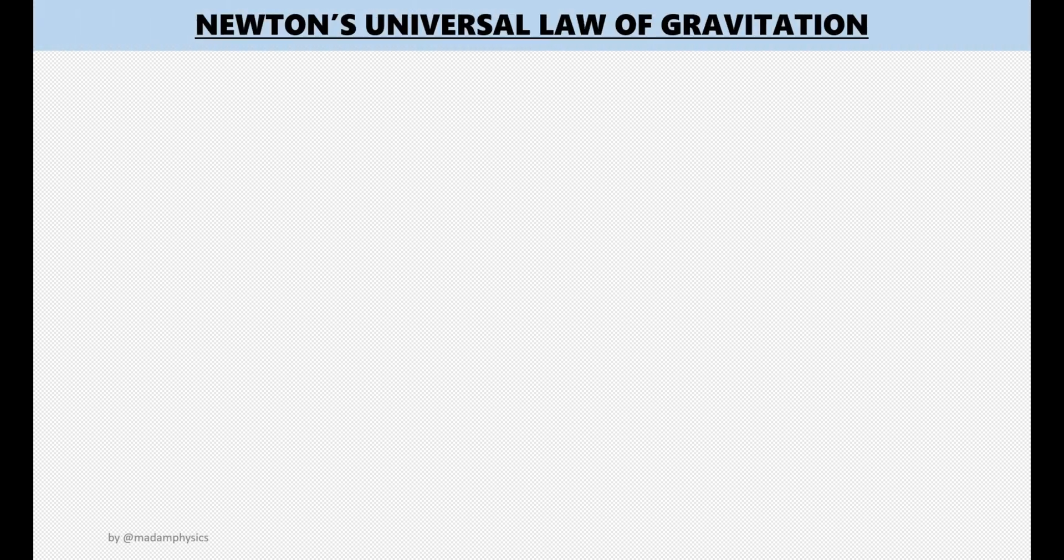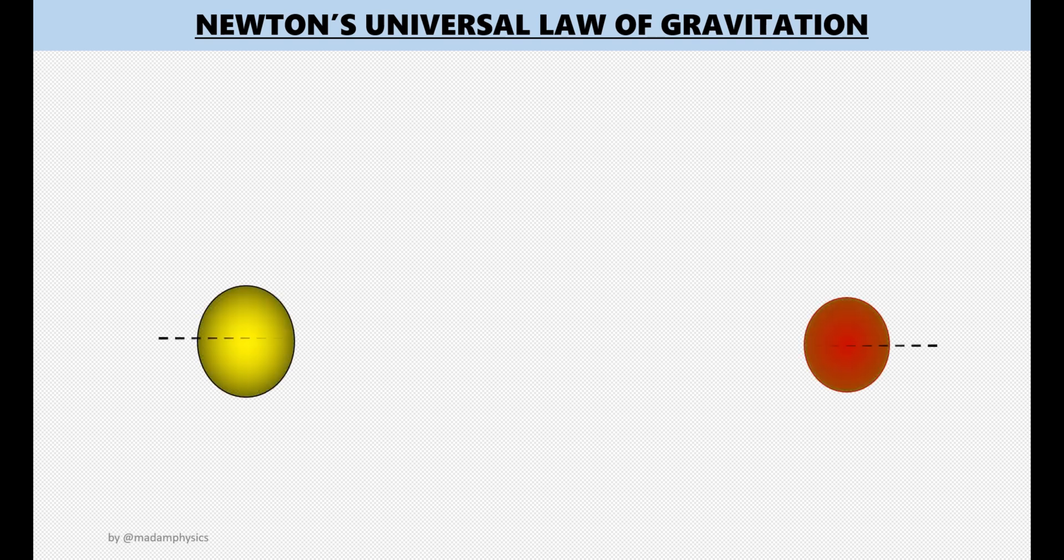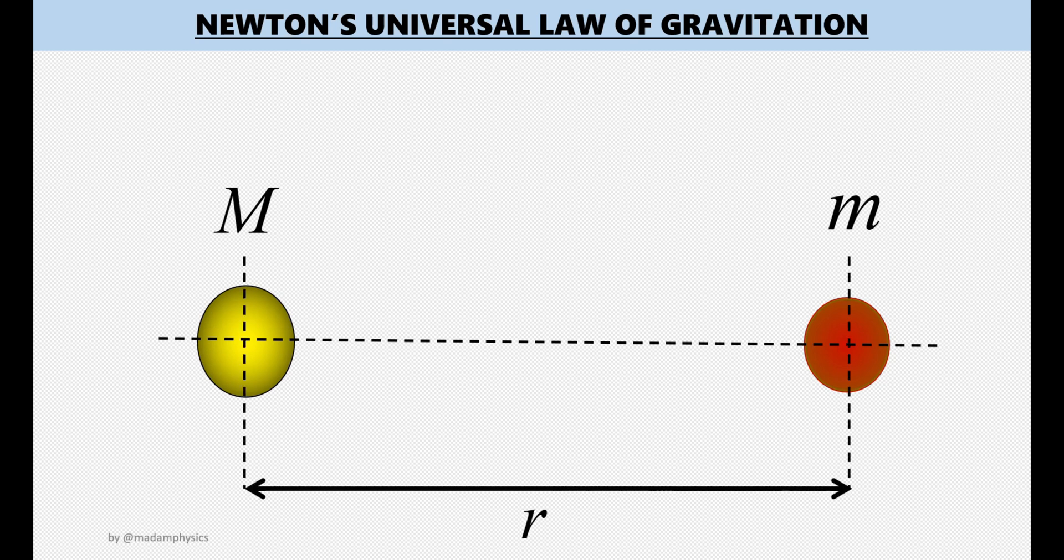There is a law called Newton's Universal Law of Gravitation that is used to quantify this force. Let's say there are two objects with masses. We label as big M and small m to represent their mass and they are separated by distance denoted by r. This distance must be measured from the centre of the first object to the centre of the second object.